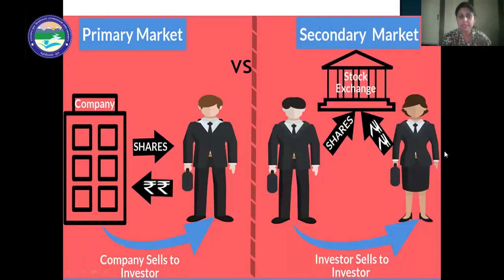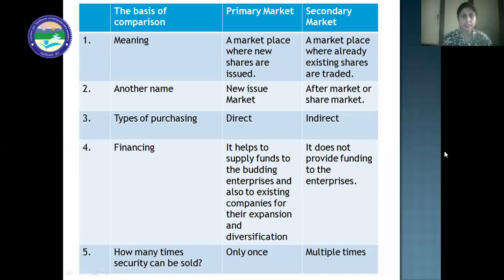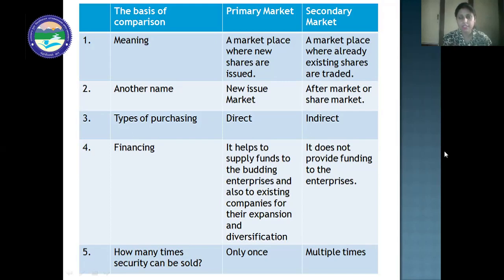Next we will do the comparison between primary market and secondary market. First is meaning: primary market is the place where new shares are issued; secondary market is the place where already existing shares are traded. Second is another name: primary market is also known as new issue market, whereas secondary market is known as aftermarket or share market. Third is type of purchasing: in primary market, there is direct purchasing from the company; whereas in secondary market, investors do buying and selling from each other — there is no direct purchasing from the company.